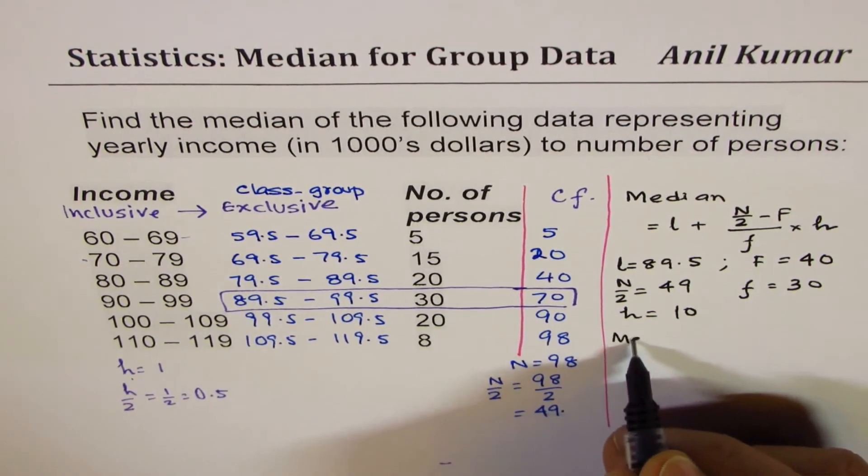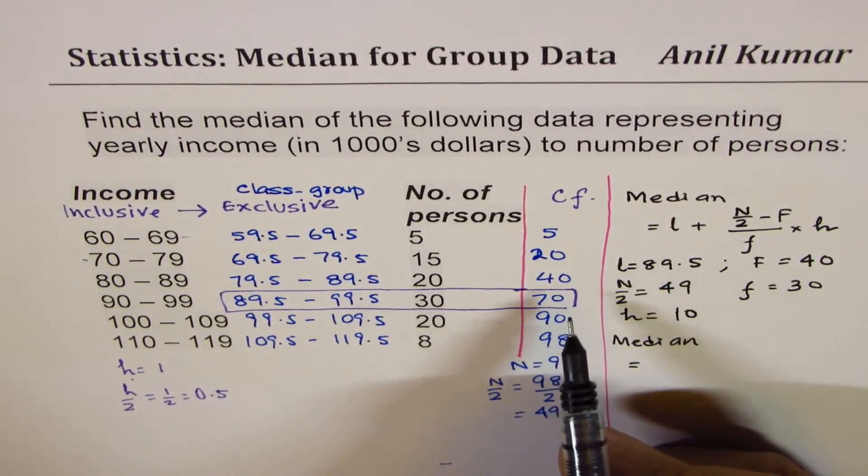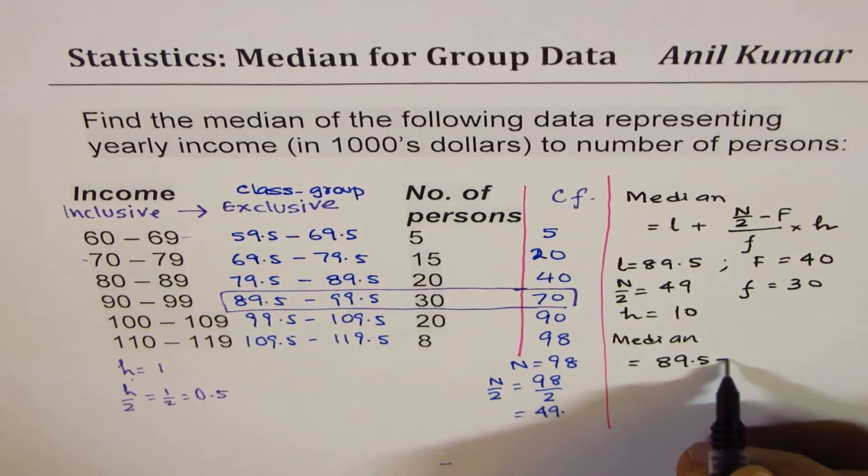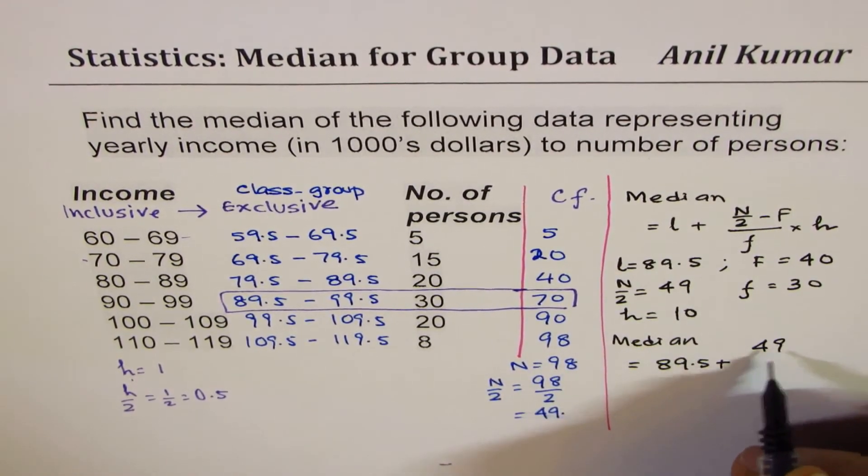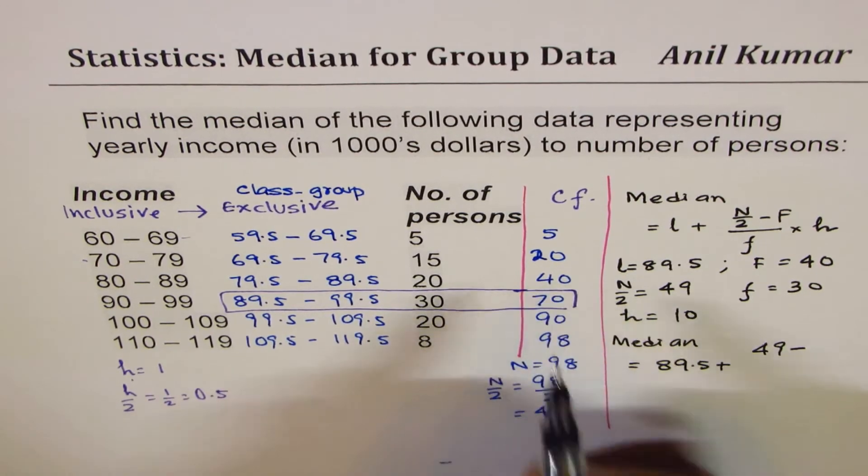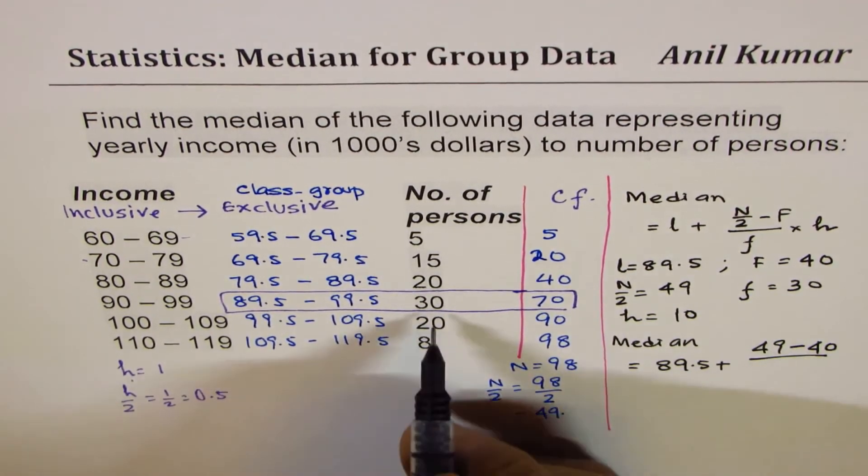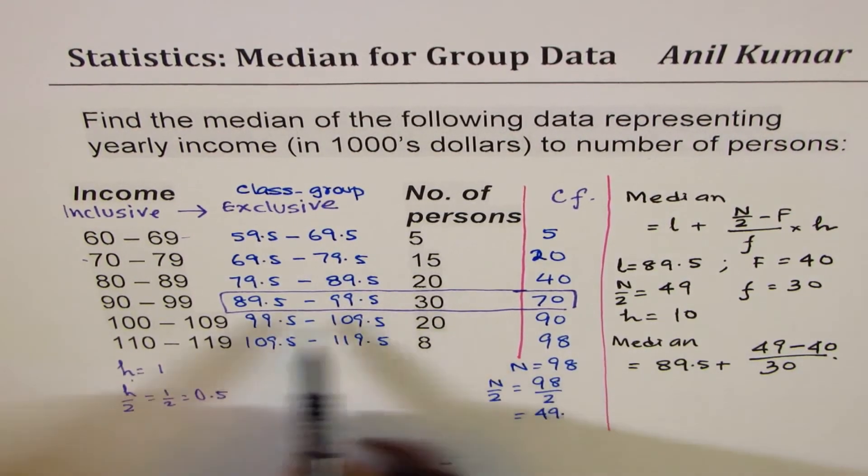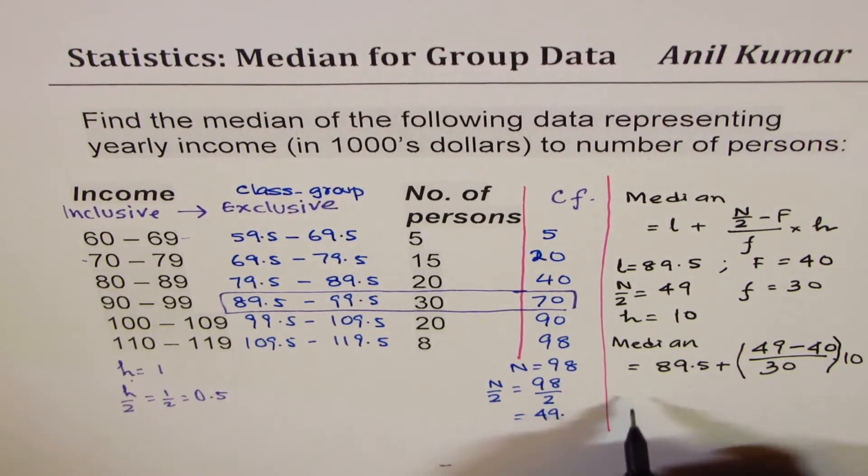Substituting these values, we get the median as equal to 89.5. It has to be more than that. Plus how much more? 49th element we want. We already have 40. So 9 more equally distributed amongst 30, and interval here is of 10. So that is how we can get our value.